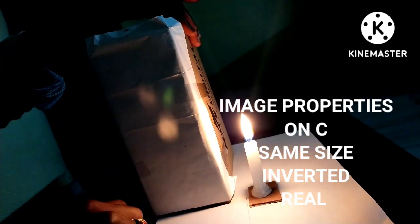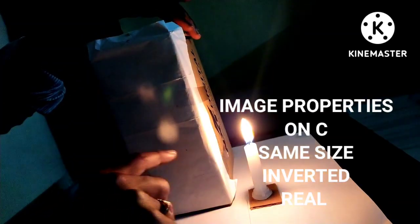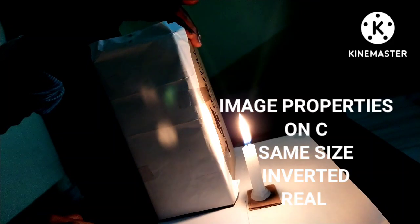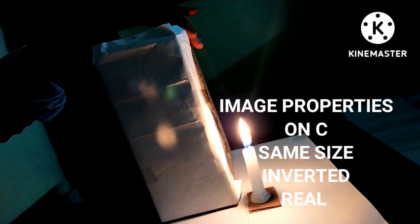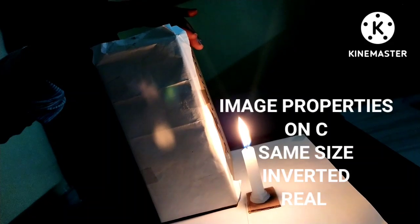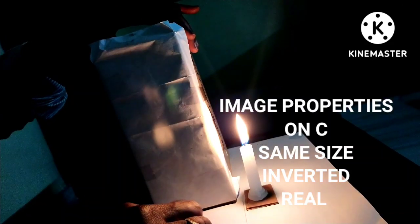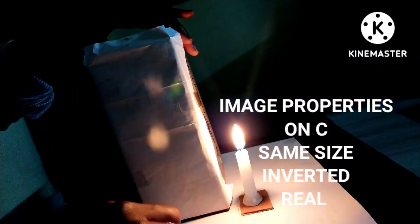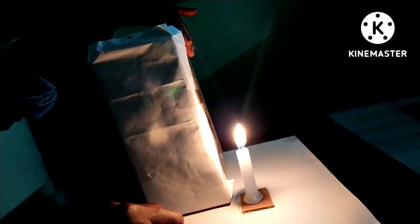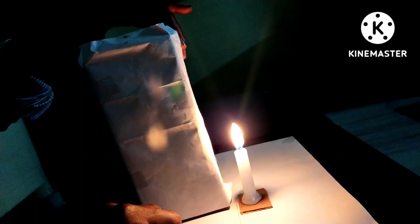Look at the image. The image is same size of the object. That means flame of the candle is same as the image. It is inverted, real. So, when the object is kept at C, image formed on C.